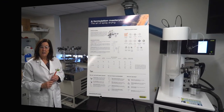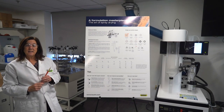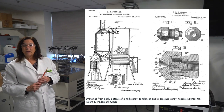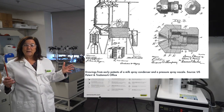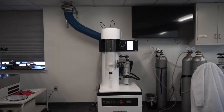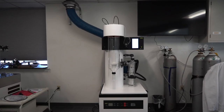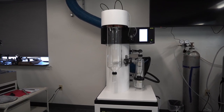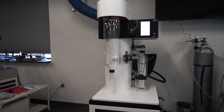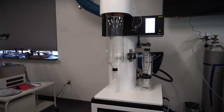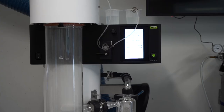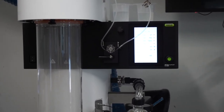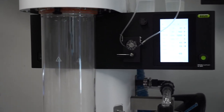Spray drying is not a new technology. It was invented in the late 1800s, with modern developments in 1920 or 1930, and this brings us to our very modern new spray dryer, which was launched in 2022. Essentially, spray drying is a physical evaporation method and is known as the largest industrial evaporation method.